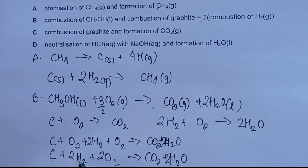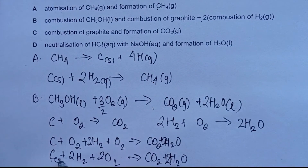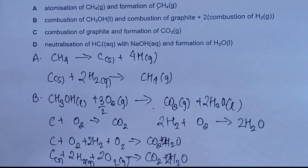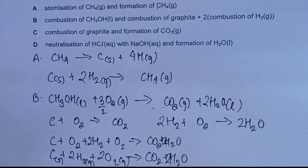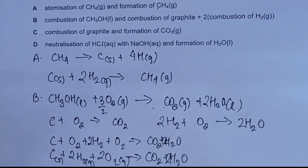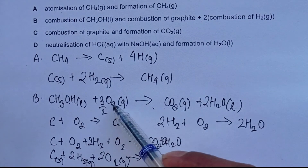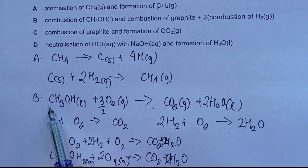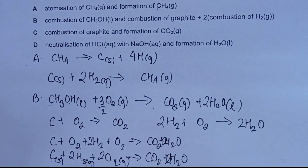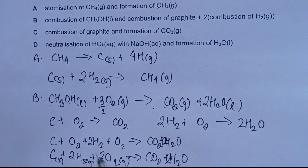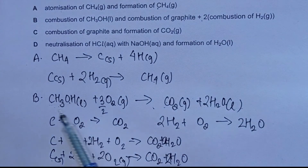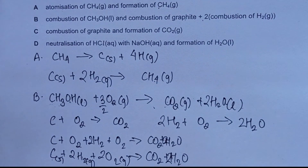However, in the second equation the reactants are carbon, hydrogen, and oxygen — all elements in their standard states, so their enthalpy changes are zero. In the first equation, methanol (CH₃OH) is a compound and will have a non-zero enthalpy change value. So the two equations cannot be numerically equal — choice B is ruled out.